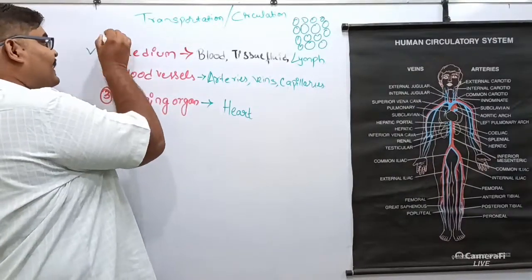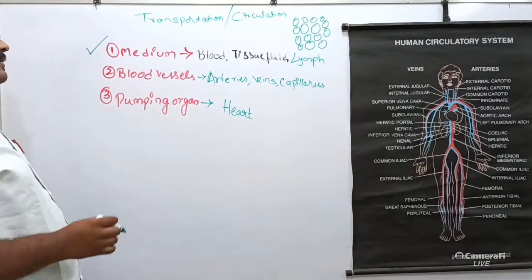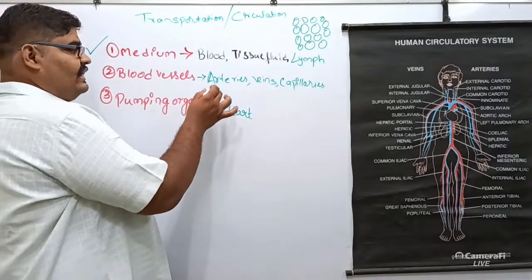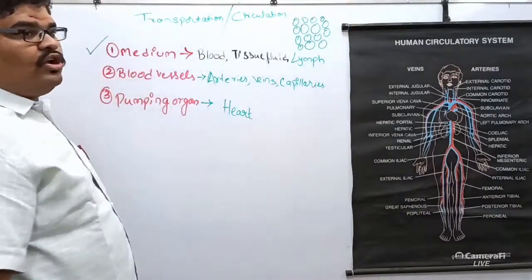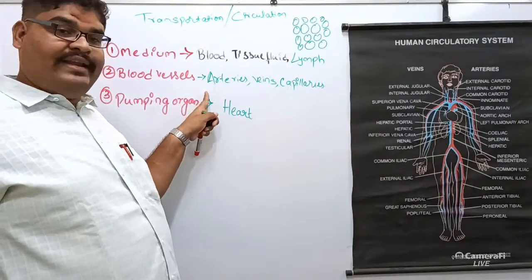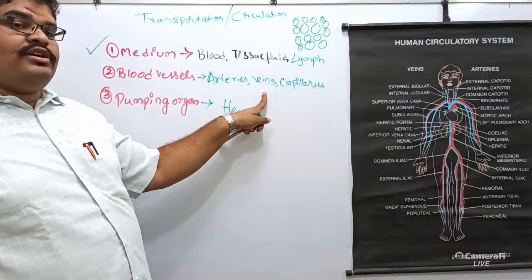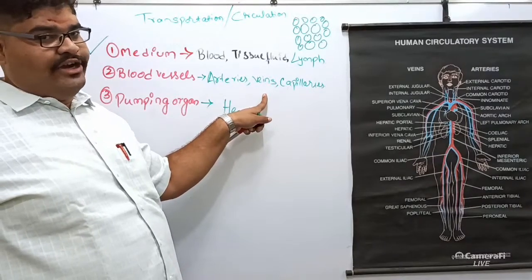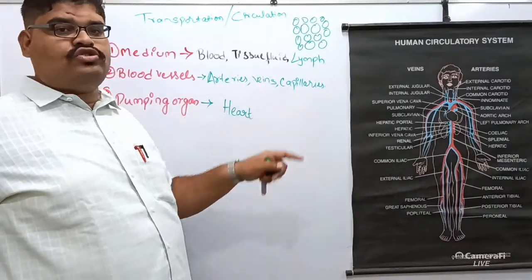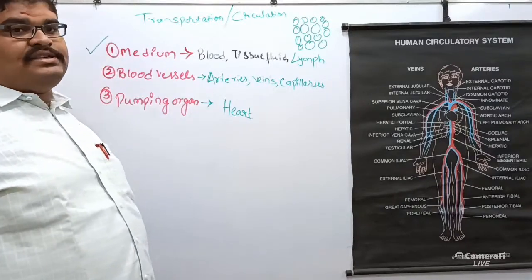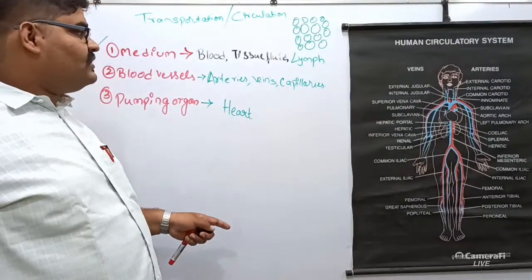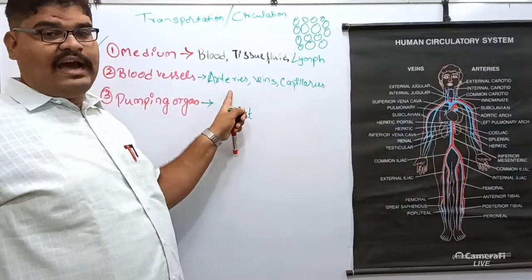Coming to the blood vessels of the circulatory system — they are arteries, veins, and capillaries. Arteries carry oxygenated blood from the heart to various parts of the body. Veins carry deoxygenated blood from various parts of the body to the heart. Arteries have their own capillaries and veins also have their own capillaries. The role of capillaries is to reach each and every cell of our body. At the end of this class, we will also discuss the differences between arteries and veins.